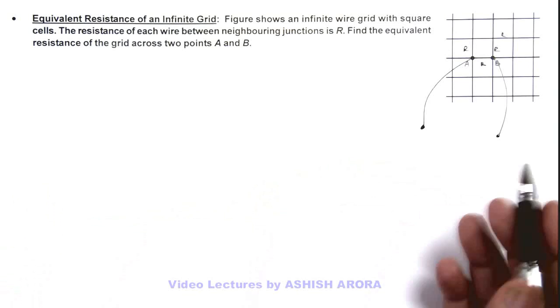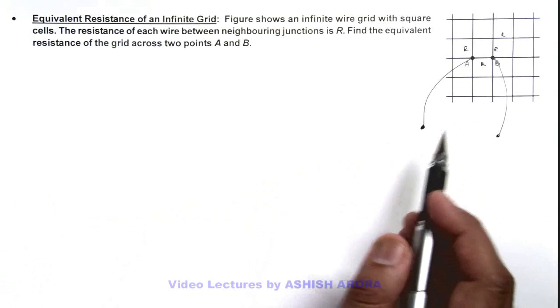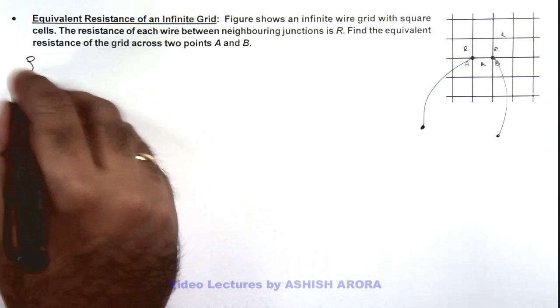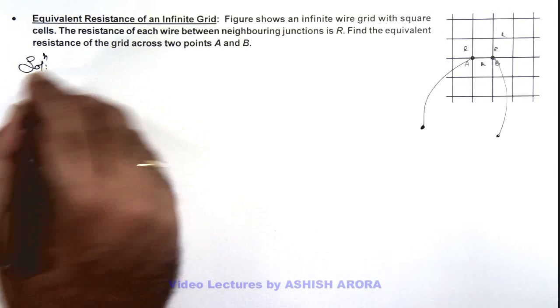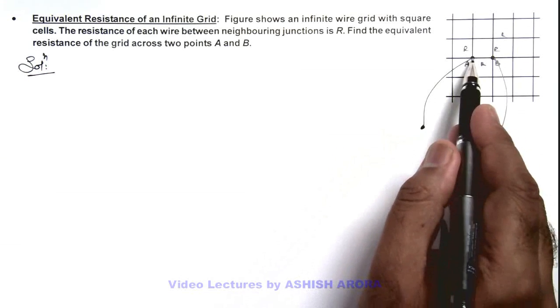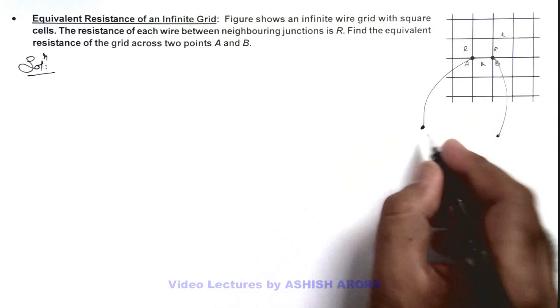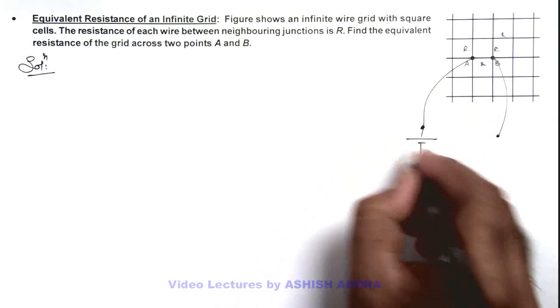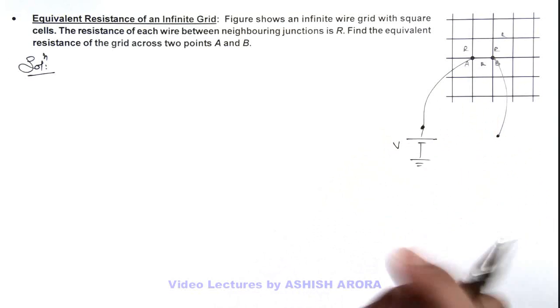In this situation we solve this problem by using principle of superposition. If we connect a battery between terminal A and it is grounded, say this is a battery of voltage V and it is connected to ground.